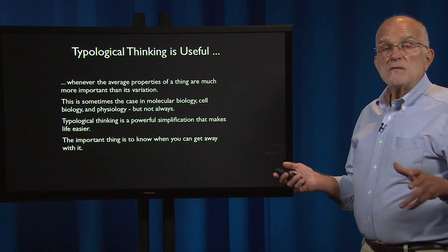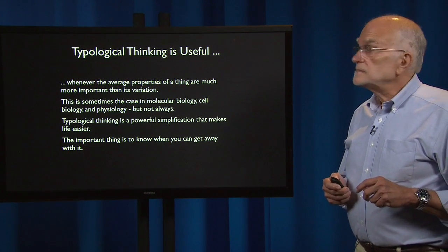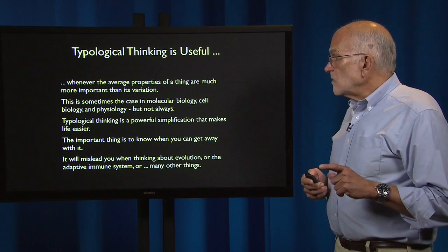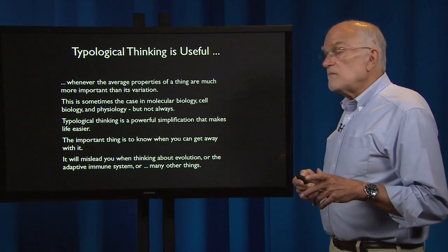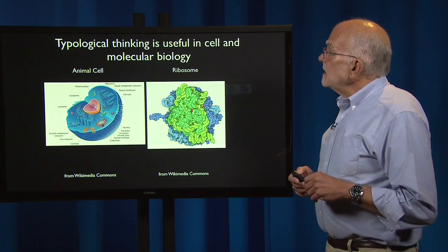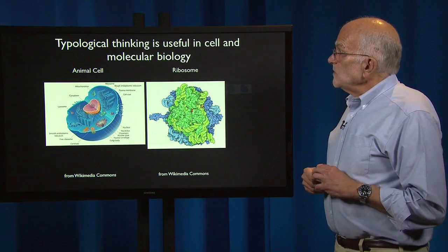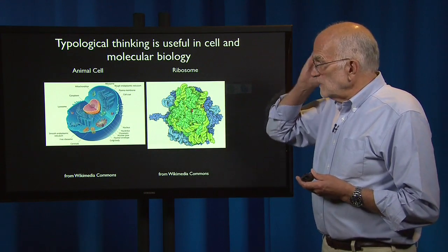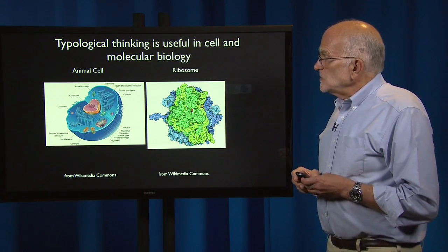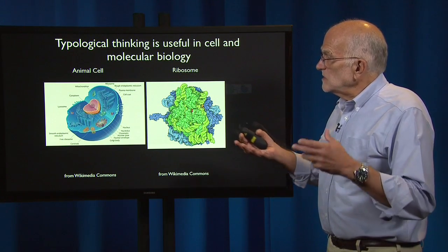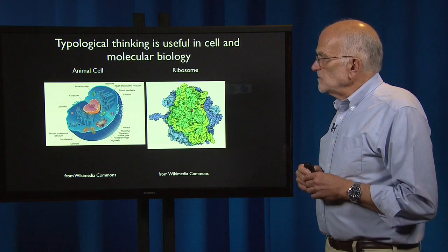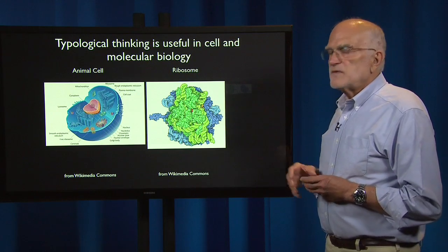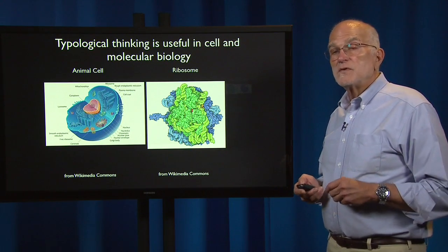Typological thinking is a powerful simplification that makes life a lot easier. It is useful whenever the average properties of a thing are much more important than its variation — sometimes the case in molecular biology, cell biology, and physiology. For example, it is useful to have a concept of an animal cell with a cell membrane, nucleus, cytoplasm, endoplasmic reticulum, and mitochondria, and to think of the ribosome as having a certain structure and performing protein synthesis.